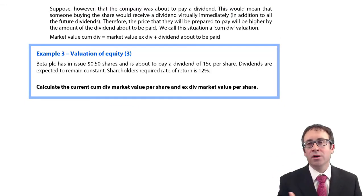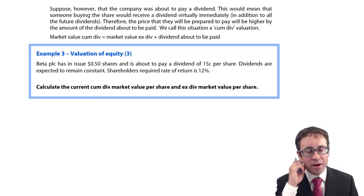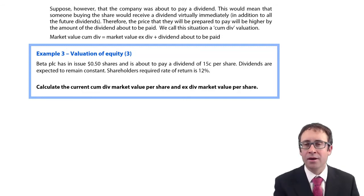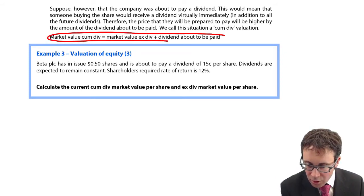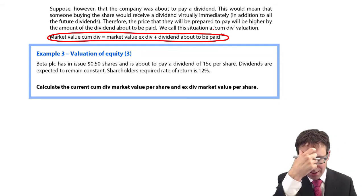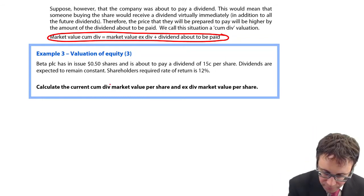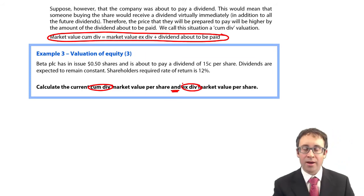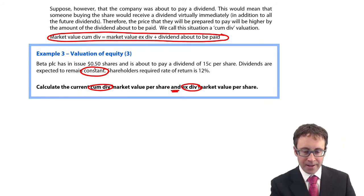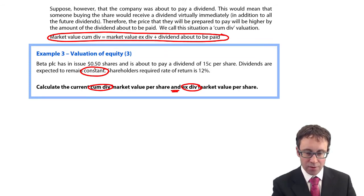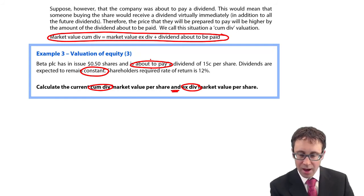What you'll recall from F1 is the difference between CUMDIV and XDIV. The CUMDIV incorporates the value of the dividend about to be paid, so it has not yet been paid. Once it is paid, the CUMDIV price will fall down to the XDIV price, giving us the formula: CUMDIV equals XDIV plus the dividend about to be paid. Beta PLC has in issue 50 cent shares and is about to pay a dividend of 15 cents — so we are looking at a CUMDIV price. That D0 is 0.15.